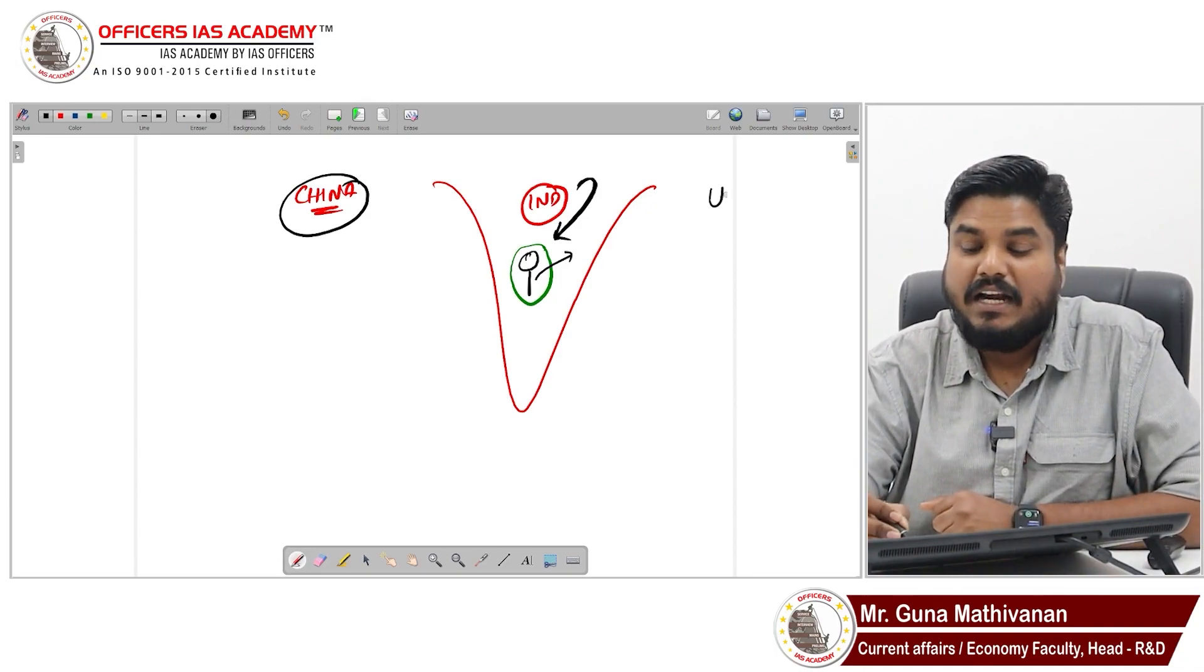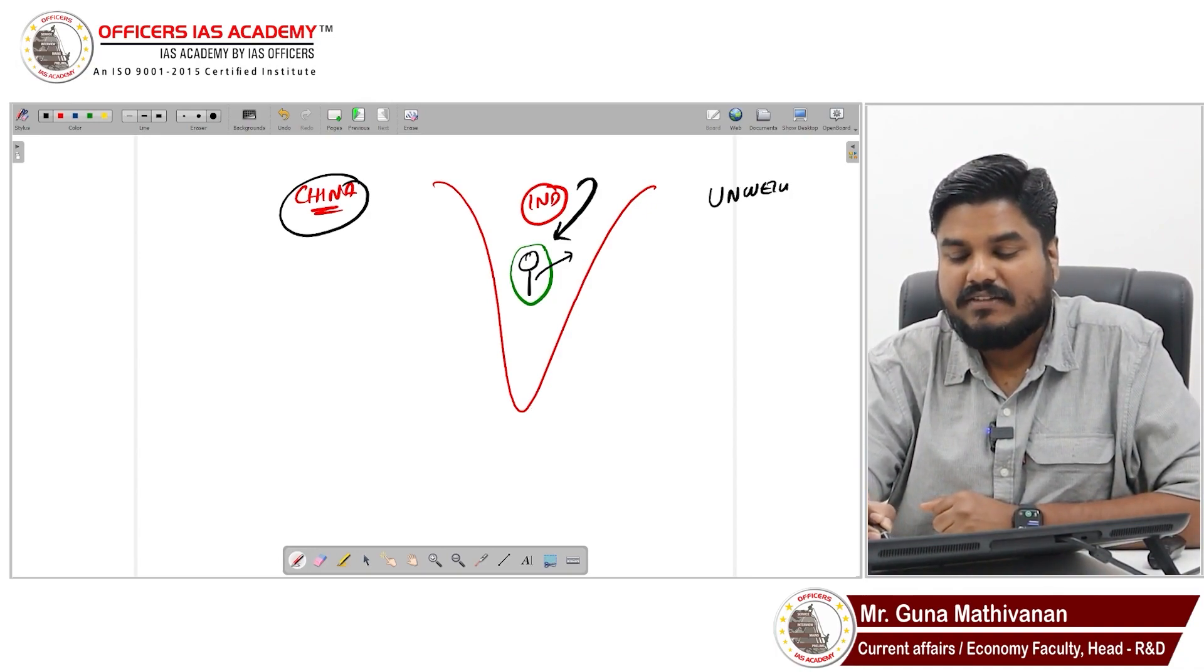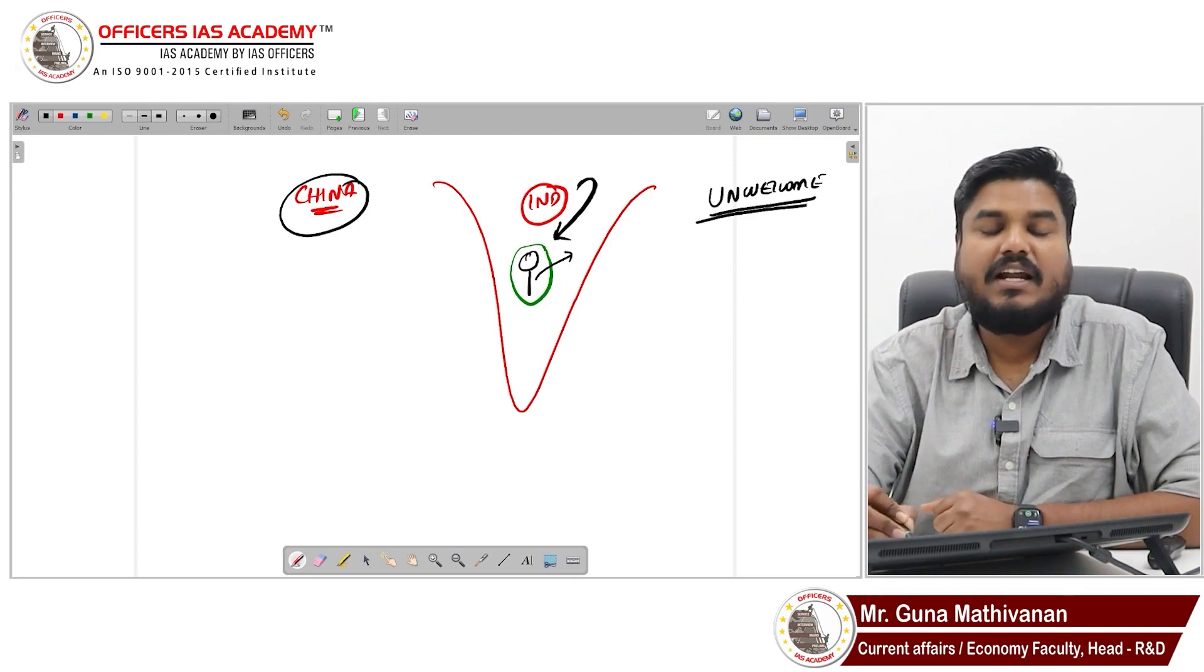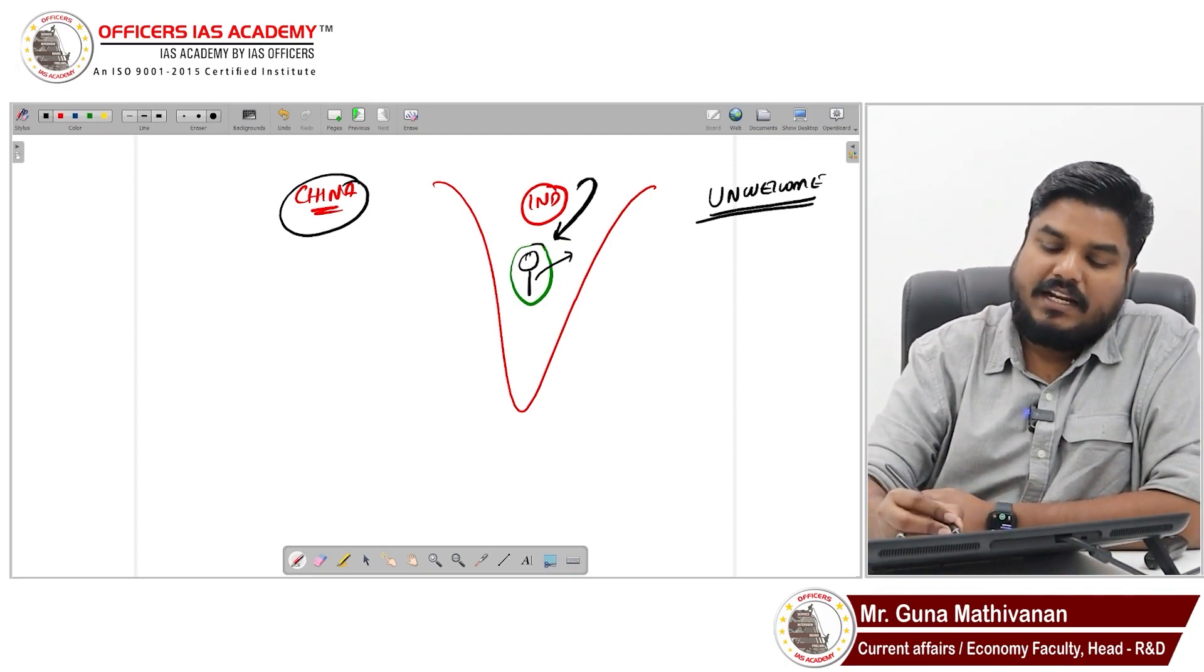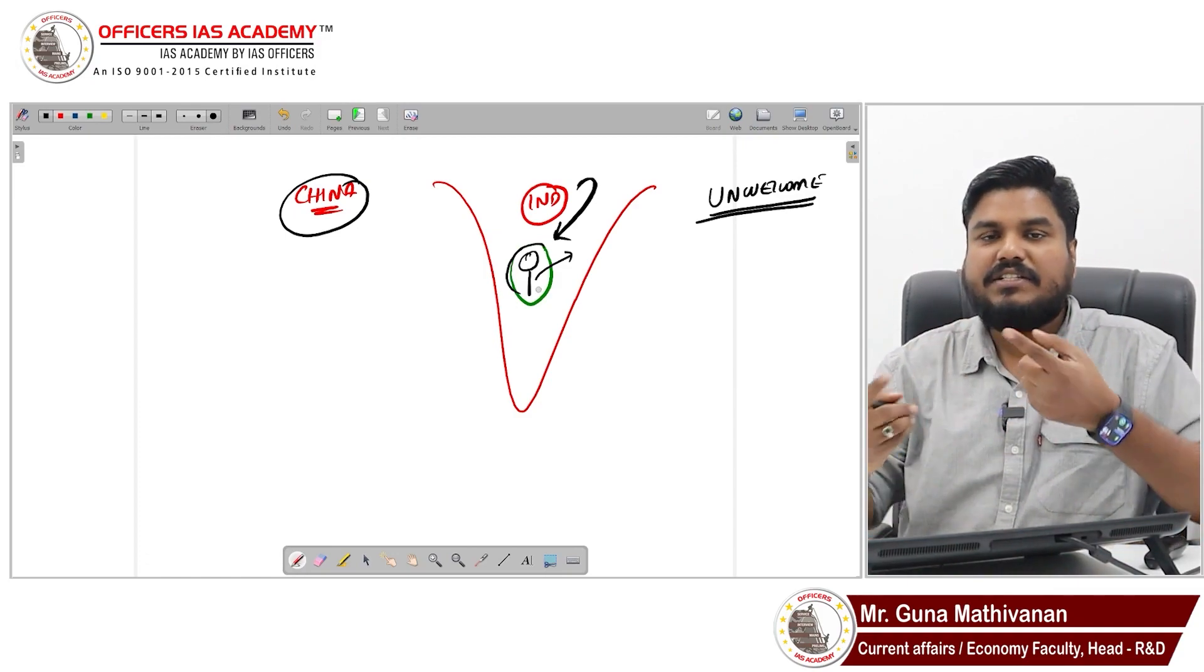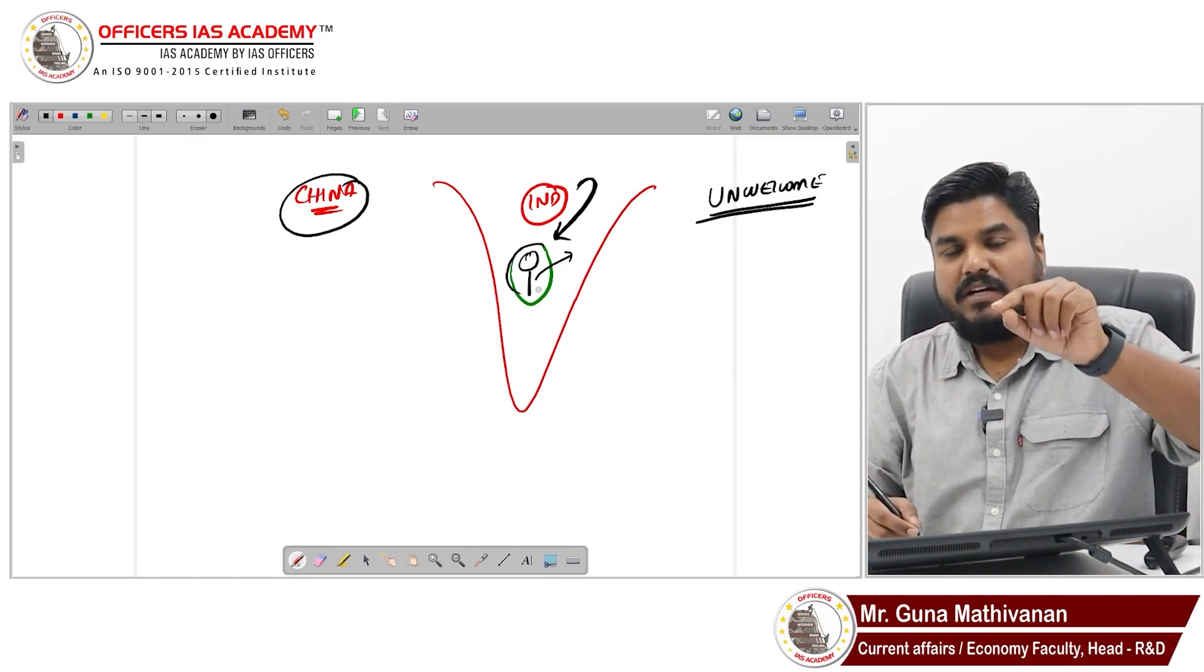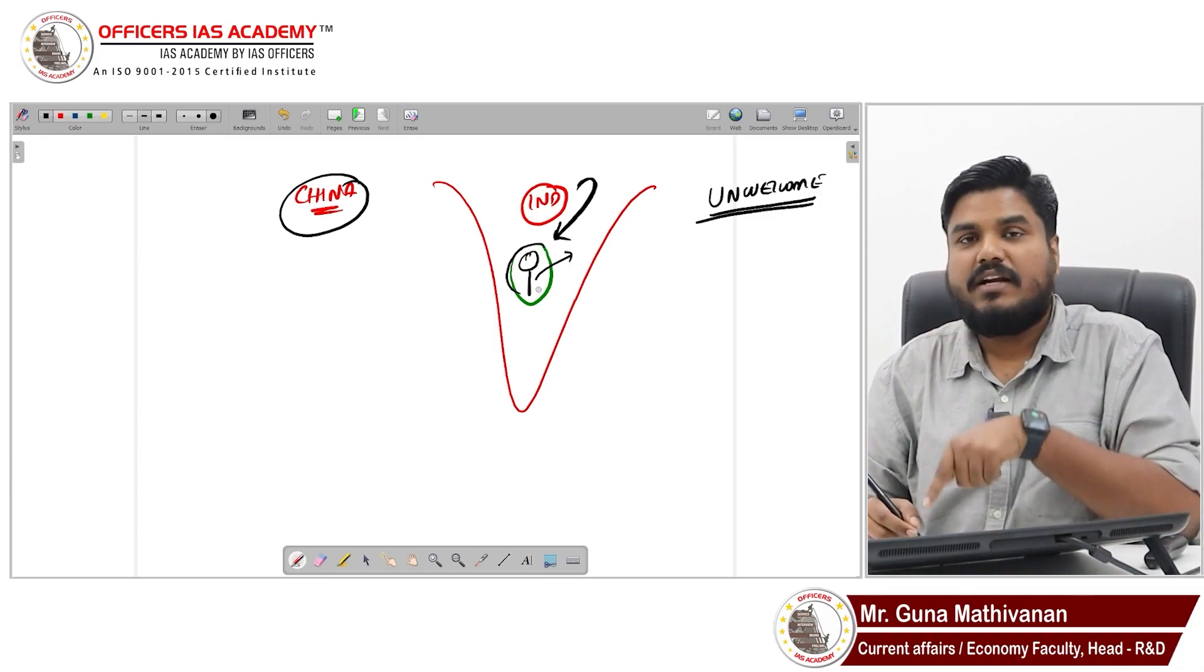That means an unwelcome person. Persona non grata means unwelcome person. So a Chinese diplomat working inside India is doing something against India. Now Indian government can declare him as persona non grata.